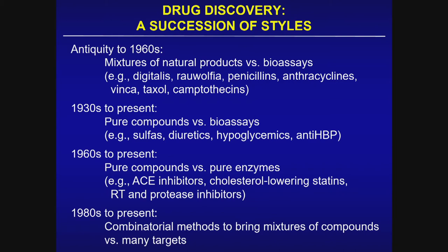Throughout history, until the middle part of the last century, drug candidates were generally driven by mixtures of natural products or even folk remedies, potentially qualified in bioassays that defined activity in a biological system that might be therapeutically relevant. Examples include digitalis, the Rauwolfia alkaloids for hypertension, penicillin as anti-infectives, and from a cancer perspective, natural products that gave us anthracyclines, vinca alkaloids, and others.